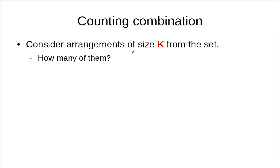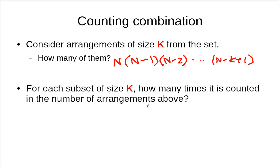So this is the number of subsets. If you want to count it again: how many arrangements? It's N times N minus 1 times N minus 2 up to N minus K plus 1. And for each set of size K, how many times is it counted? K factorial. So it's going to be N times N minus 1 up to N minus K plus 1 over K factorial.